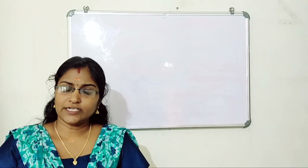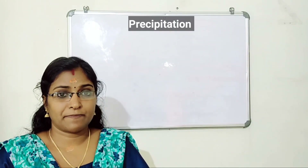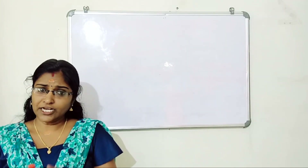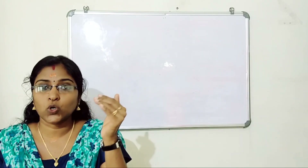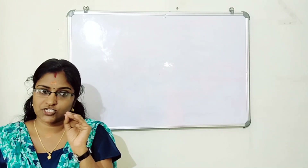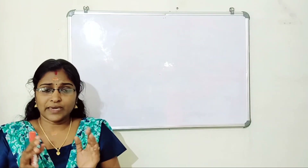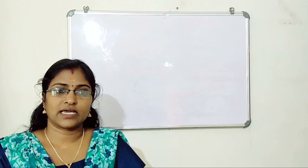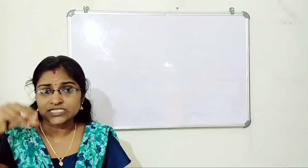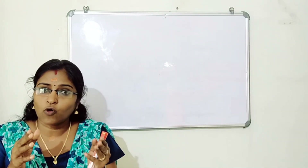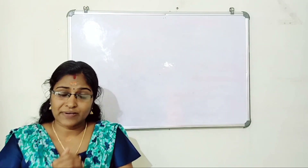Next important topic is precipitation and its different forms. Continuous condensation causes the droplets in clouds to grow in size. Being unable to resist the gravitational force of the earth, water droplets are released from clouds and fall to earth in different forms. This process is called precipitation.